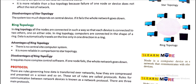Disadvantage of ring topology: it requires more complex control software. If one node fails, the whole network goes down — which is a similar disadvantage to star topology.